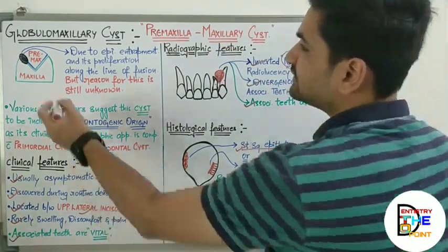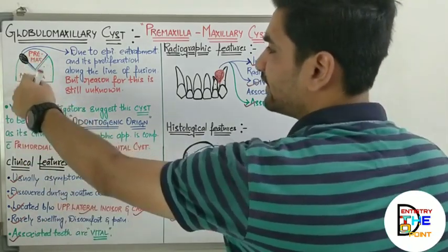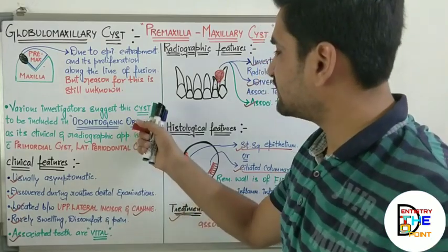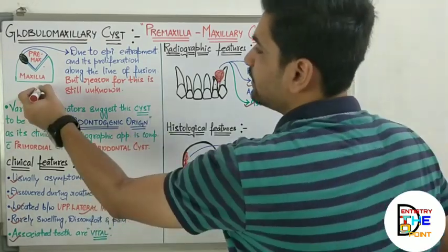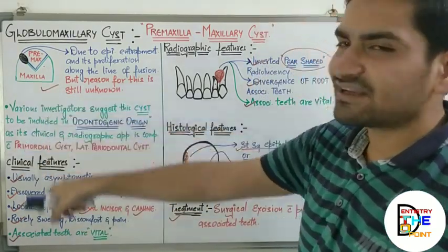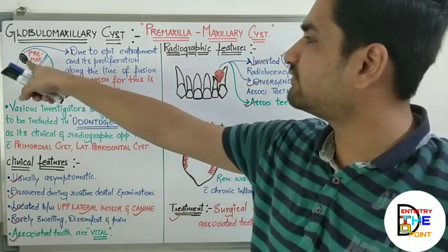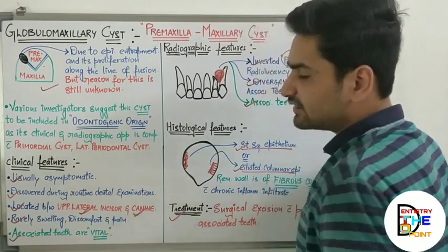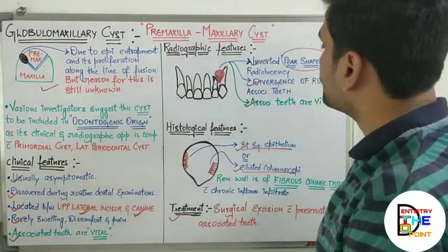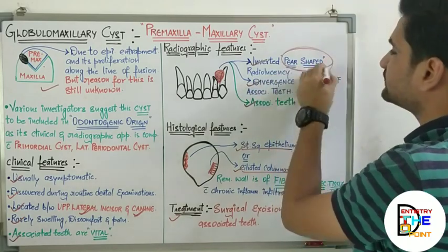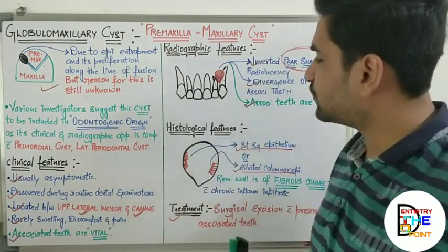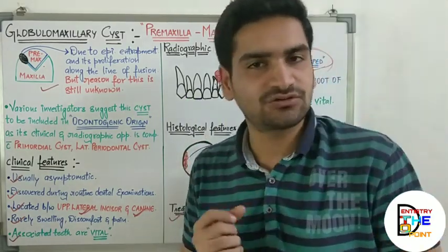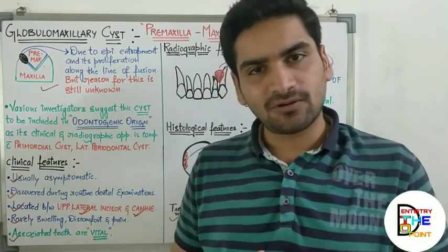To summarize, five to six things to remember about globulomaxillary cyst: first is epithelial entrapment between premaxilla and maxilla. Nowadays it is considered of odontogenic origin, but entrance exam questions still focus on its association between premaxilla and maxilla. The position is between upper lateral incisor and canine. And the classic radiographic feature is inverted pear-shaped radiolucency. These are the three to four points to remember.